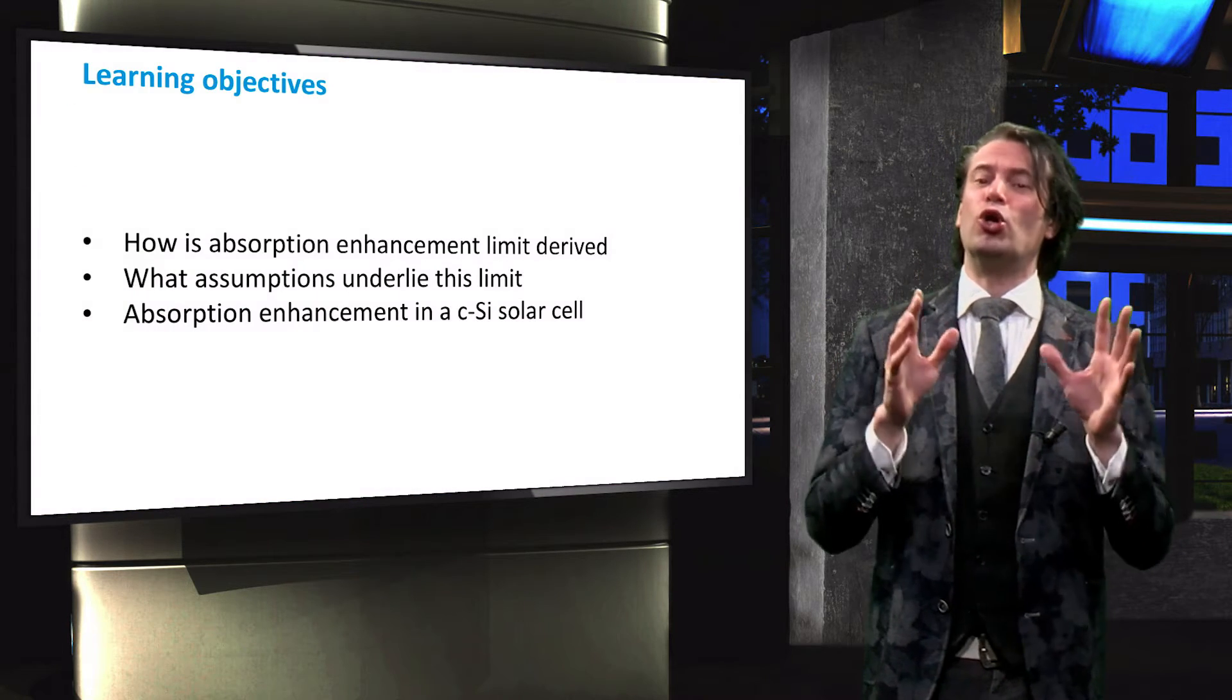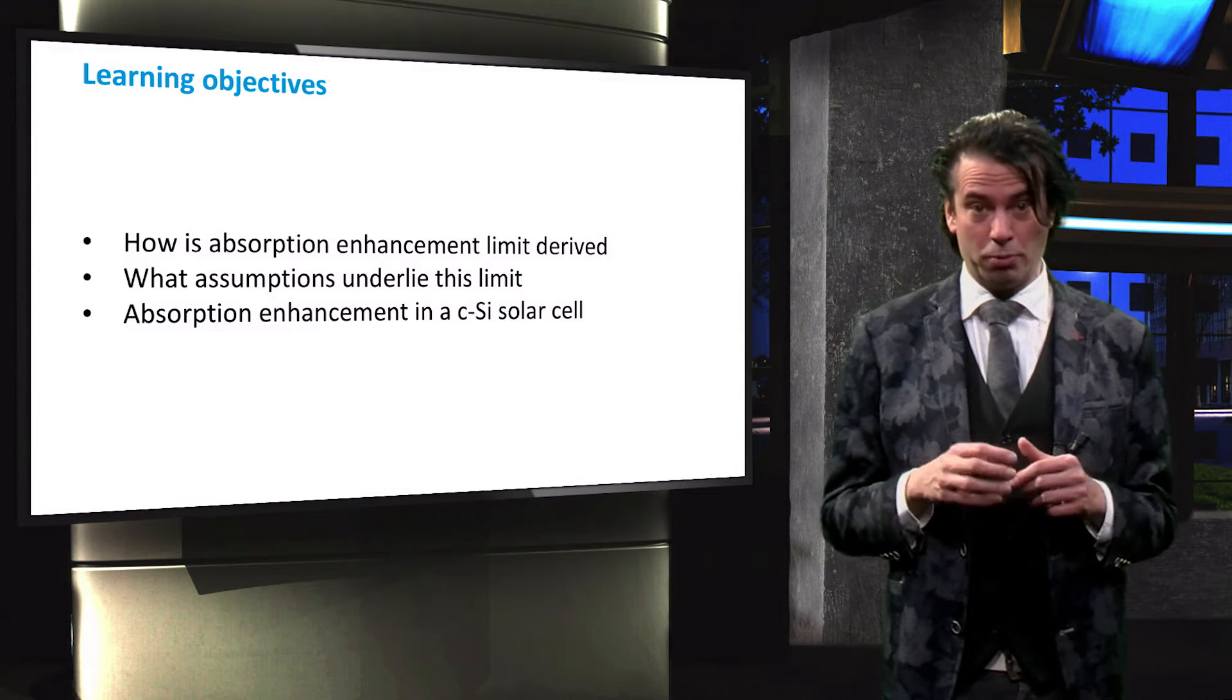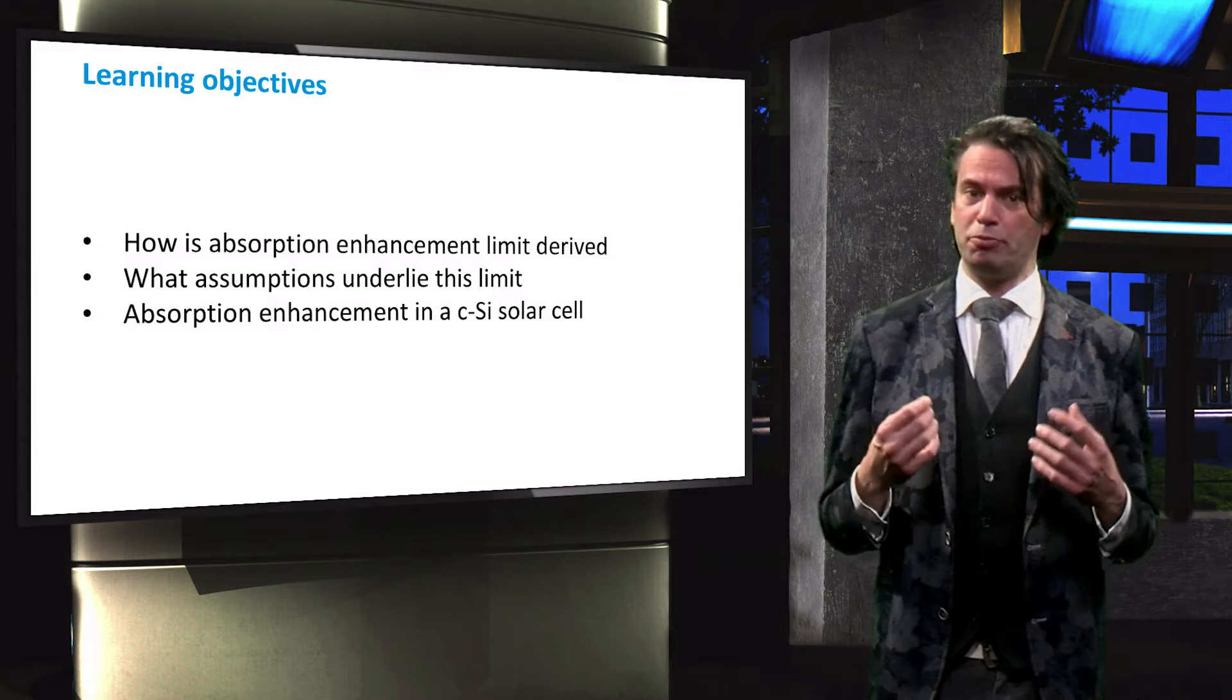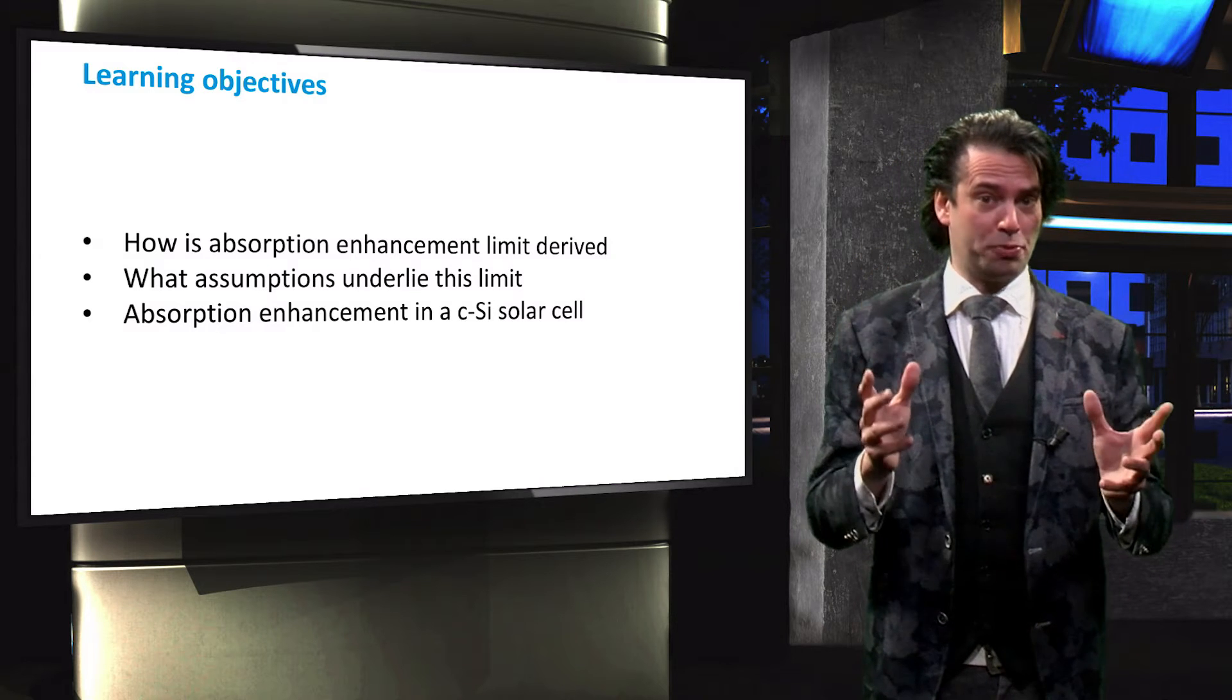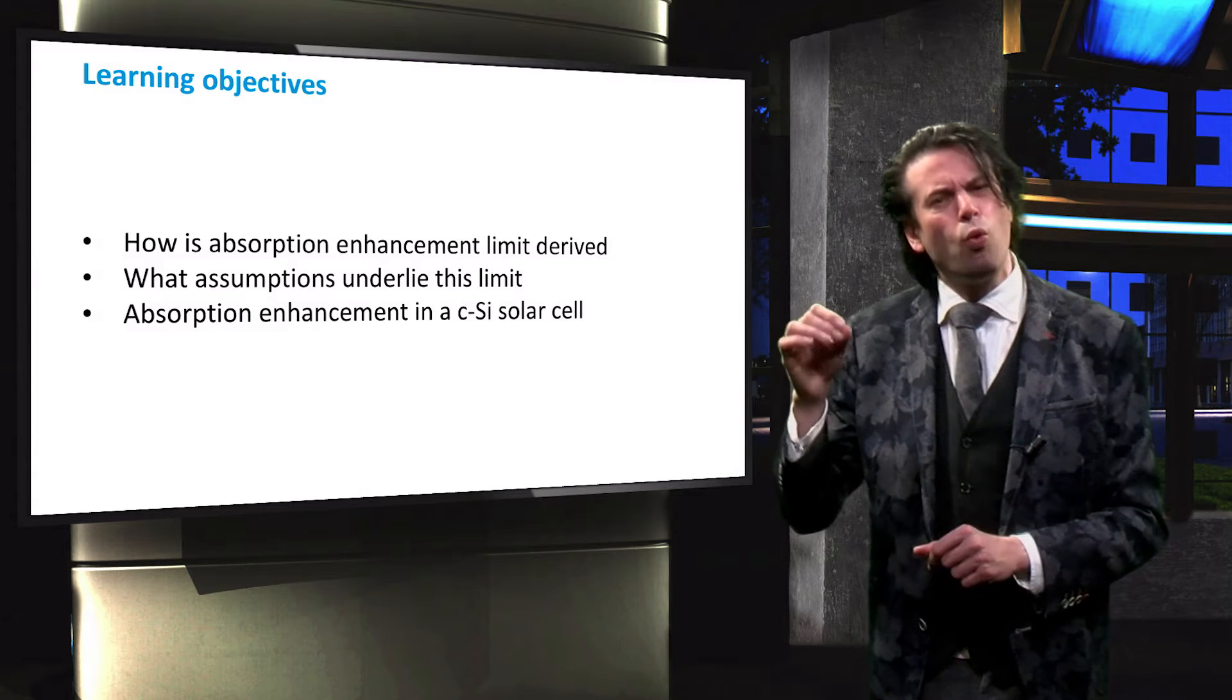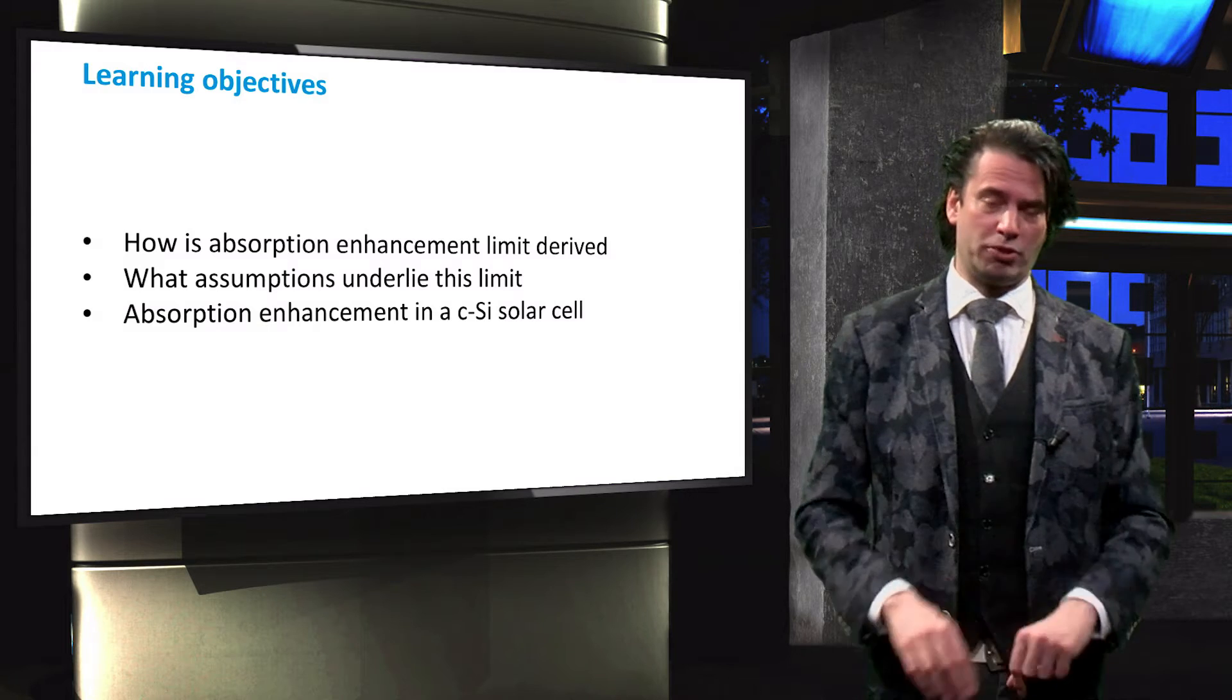In this video we will learn how an important light absorption enhancement limit named the Yablonovitch limit is obtained. We will look at the assumptions that underlie this limit. Finally we will discuss the actual absorption enhancement in a crystalline silicon solar cell and see to what extent the absorption can approach this famous limit.